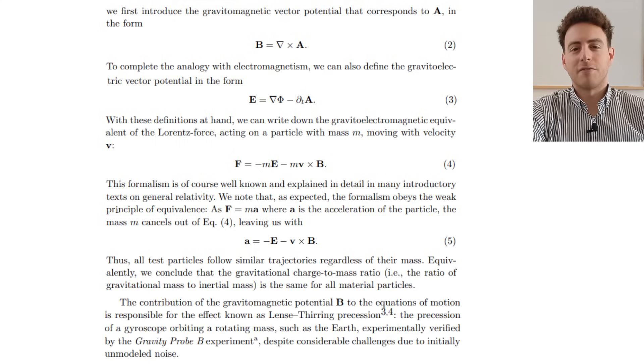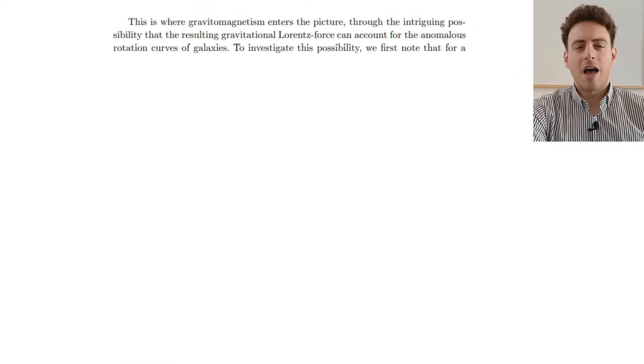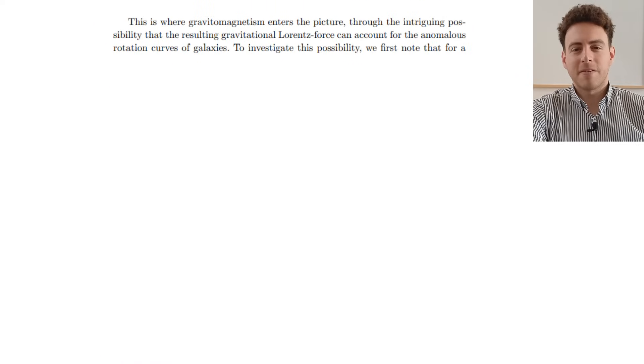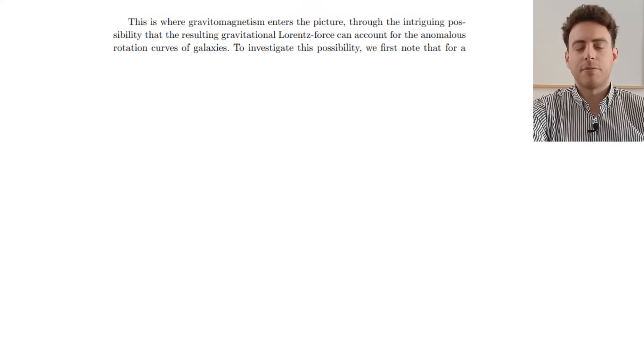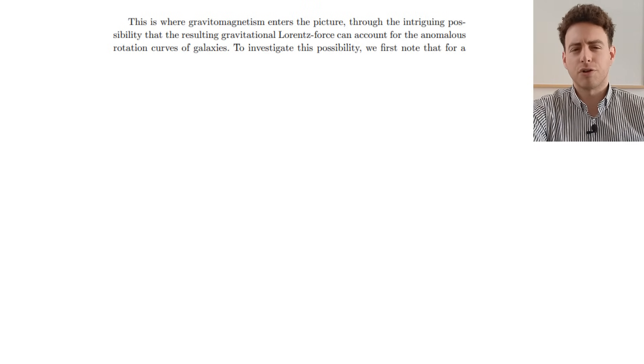The contribution of the gravitomagnetic potential B to the equations of motion is responsible for the effect known as the Lense-Thirring precession effect. And we could think that maybe the gravitomagnetic effects of B alter the orbits of stars and gas around the galaxy and explain galaxy rotation curves.